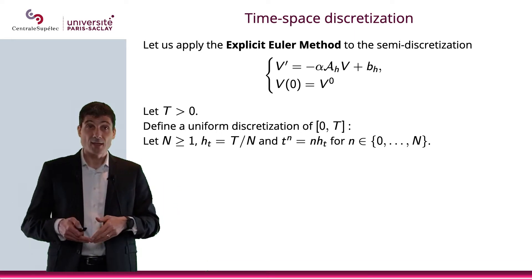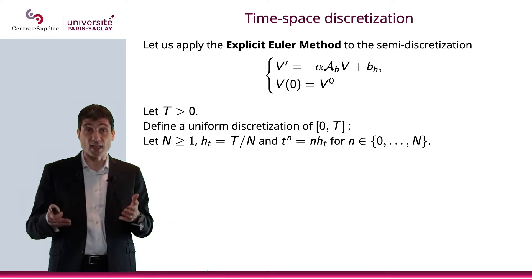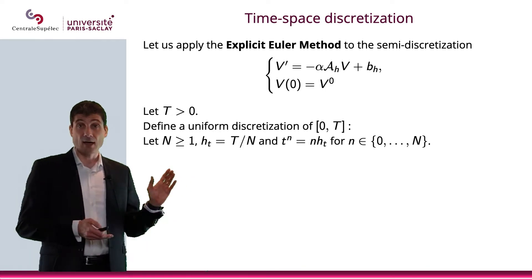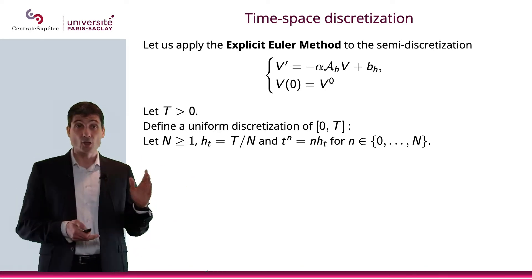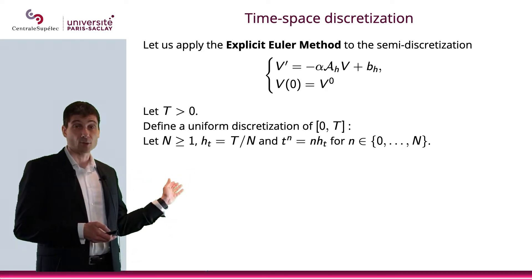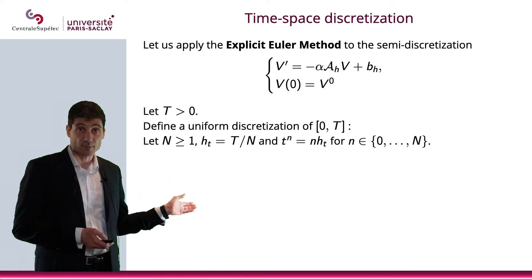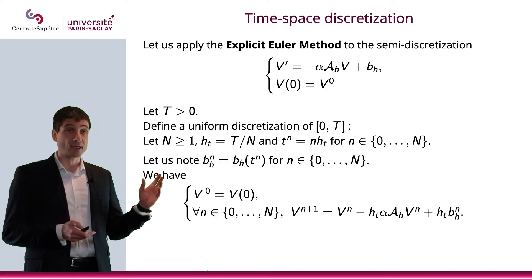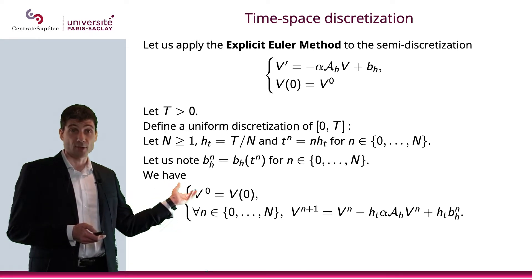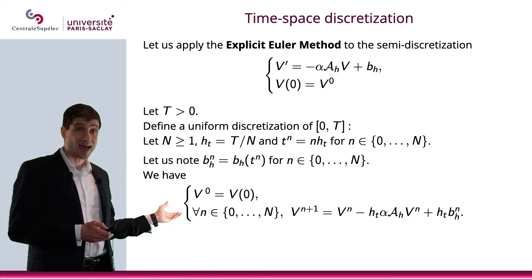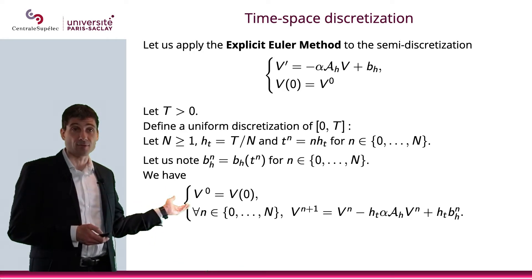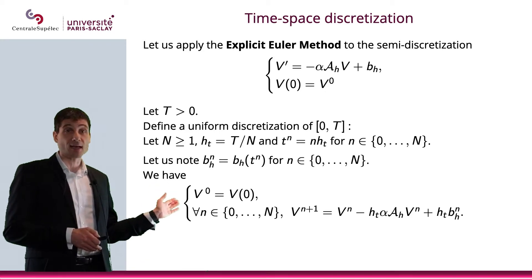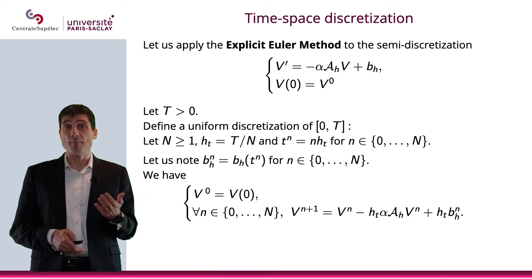We're going to consider a uniform discretization of [0, T], with time step h_t, and we define t_n = n·h_t. As a convention, we use a superscript for the time discretization and a subscript for the space discretization. We note b_h^n as b_h computed at t_n. Then the explicit Euler scheme gives: v^0 = v(0), and v^{n+1} = v^n - h_t·α·A_h·v^n + h_t·b_h^n.